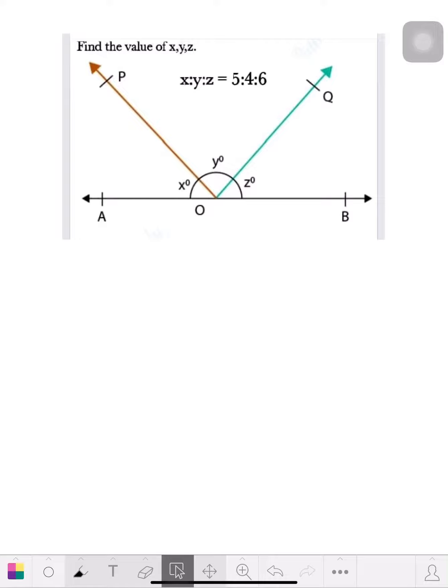They give you a proportion type thing. They'll tell you that angle X is 5, angle Y is 4, and angle Z is 6. So what this really does, you know that a straight line is 180.